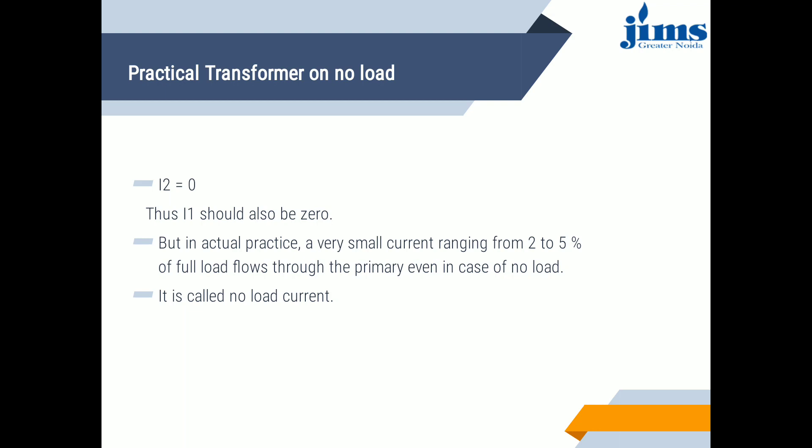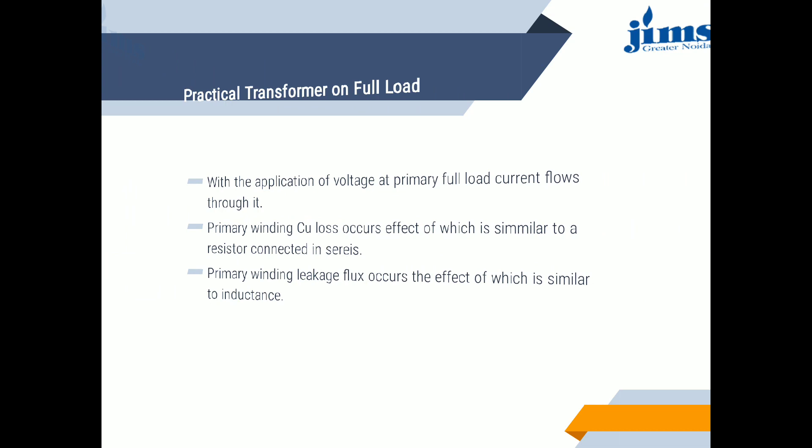The no load current I0 has two components: the in-phase active or energy component IE, and the magnetizing component IM, called the exciting current. Resolving: IE = I0·cos(φ0) and IM = I0·sin(φ0). Squaring and adding both equations: I0 = √(IE² + IM²) and φ0 = tan⁻¹(IM / IE). In actual practice, a very small current ranging from 2 to 5 percent of full load current flows through the primary under no load; it is called no load current.